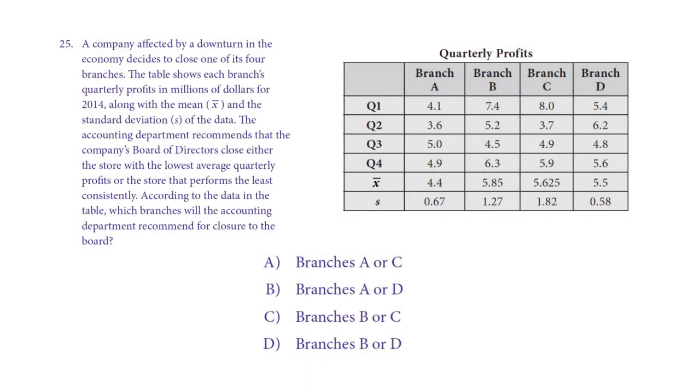A company affected by a downturn in the economy decides to close one of its four branches. The table shows each branch's quarterly profits in millions of dollars for 2014 along with the mean and the standard deviation of the data. The accounting department recommends that the company's board of directors close either the store with the lowest average quarterly profits or the store that performs the least consistently. According to the data in the table, which branches will the accounting department recommend for closure to the board?